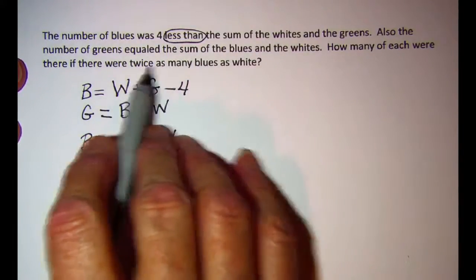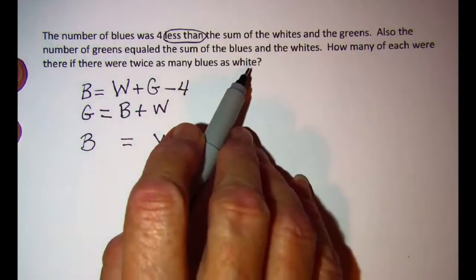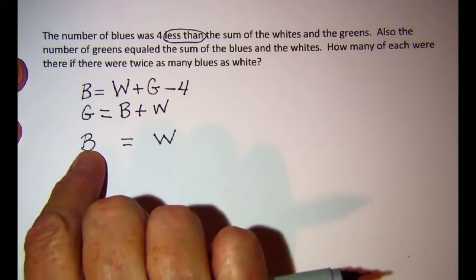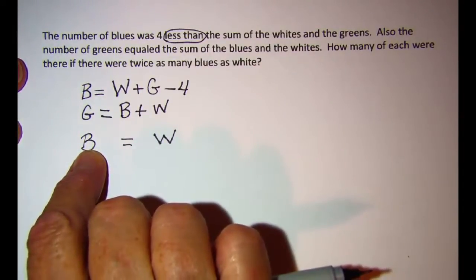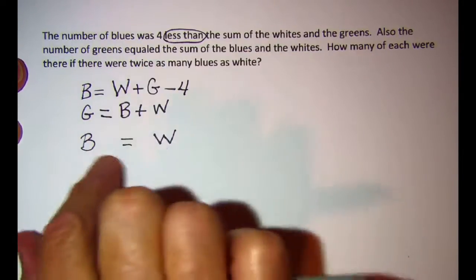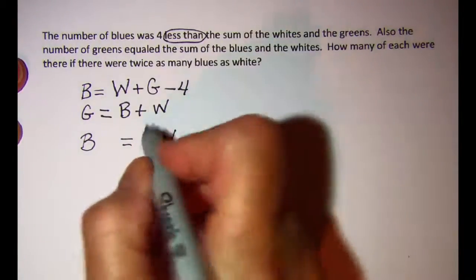But this says there's twice as many blues. So the blues, the number of blues is more than the number of whites. So this number is bigger which means that I need to multiply the two for twice. I need to multiply the W or the number of whites by two.